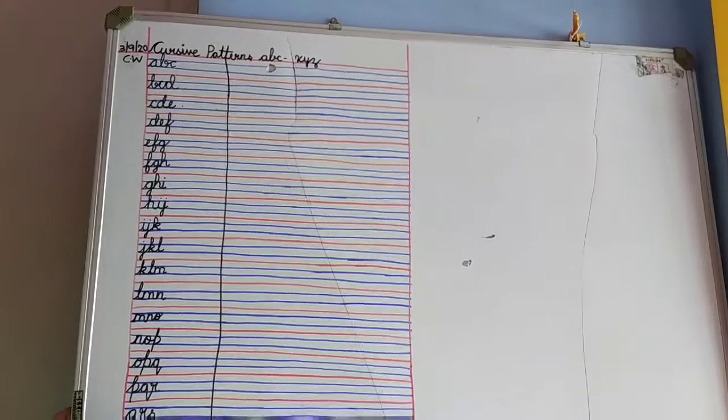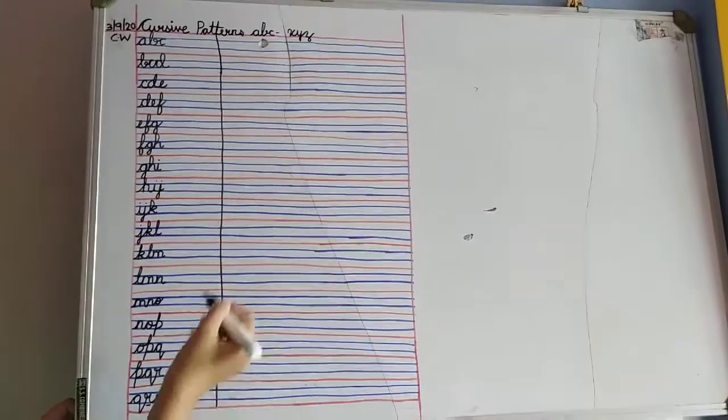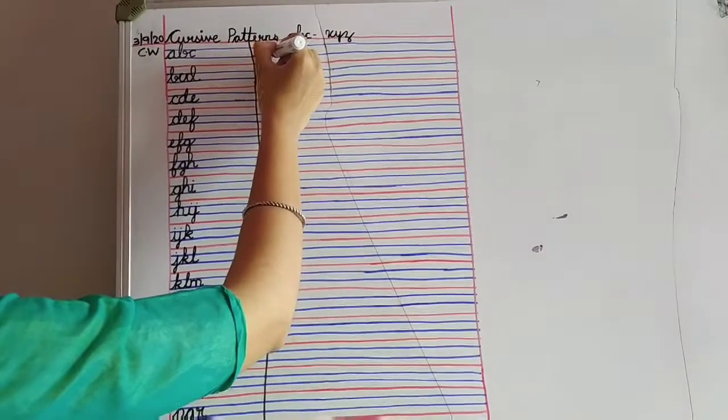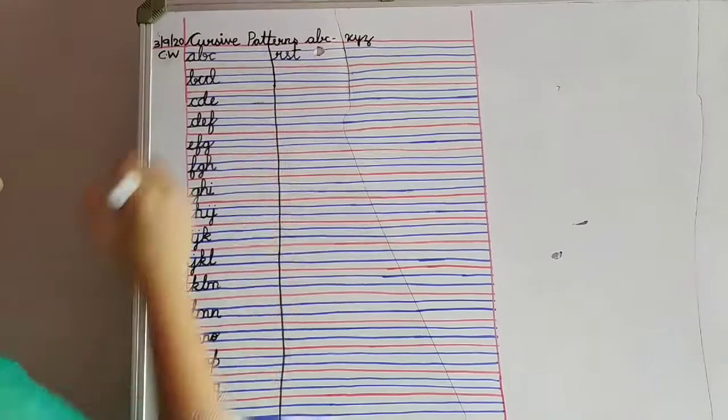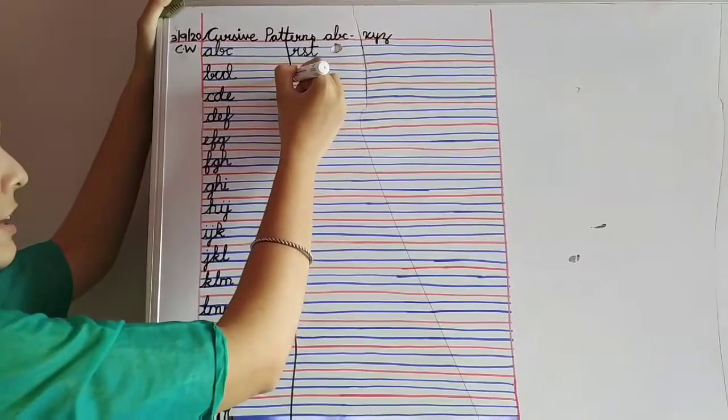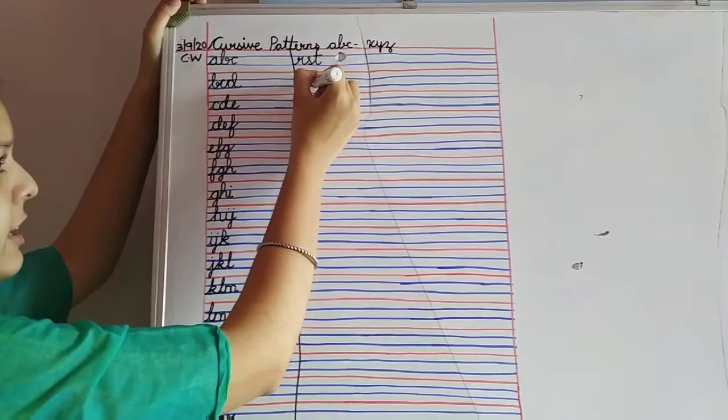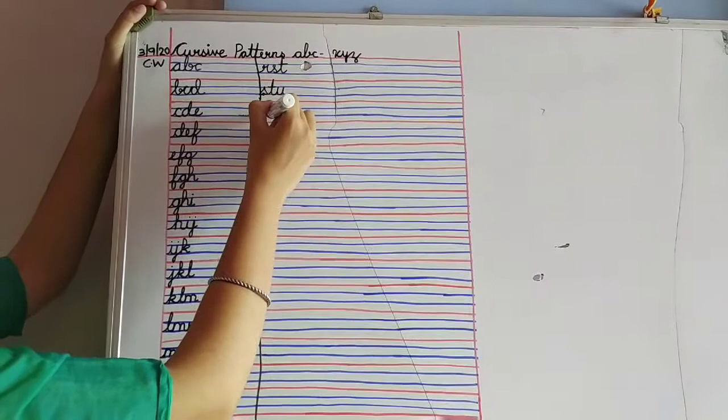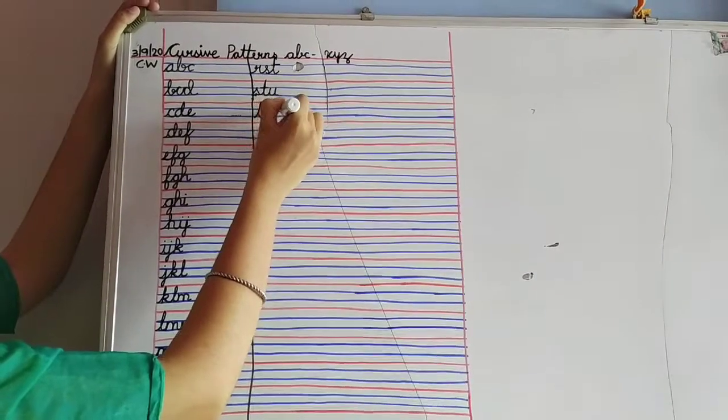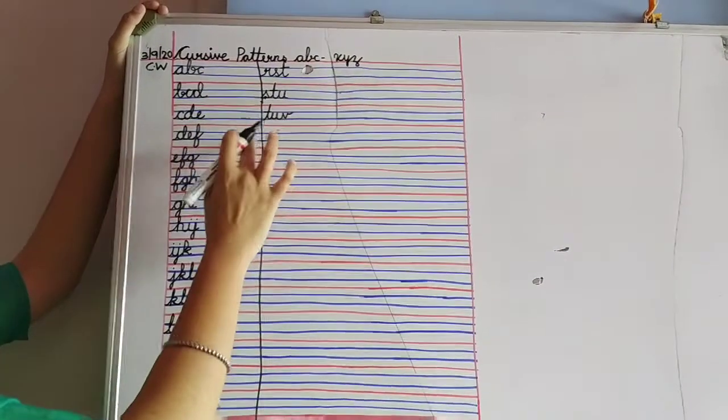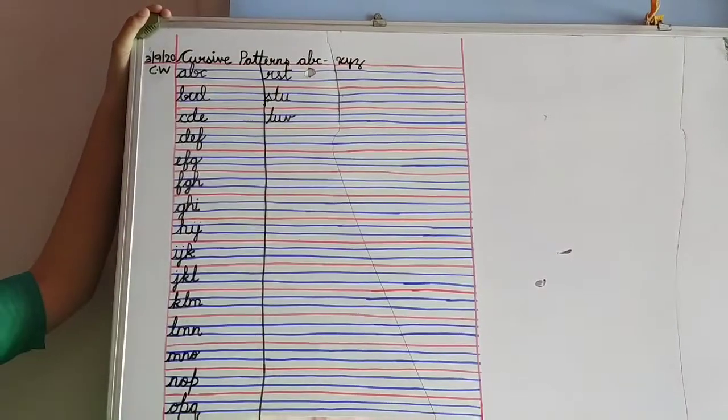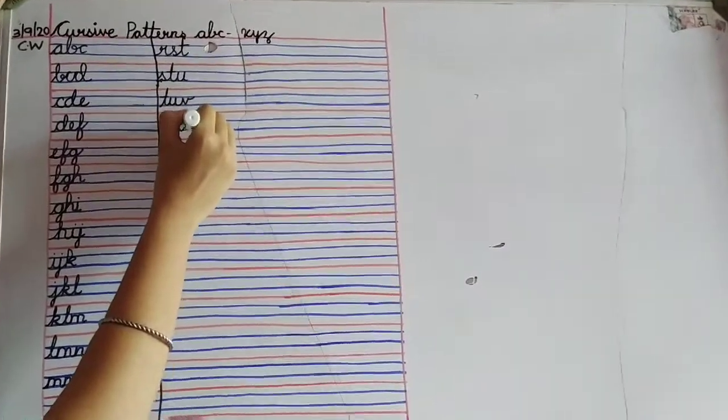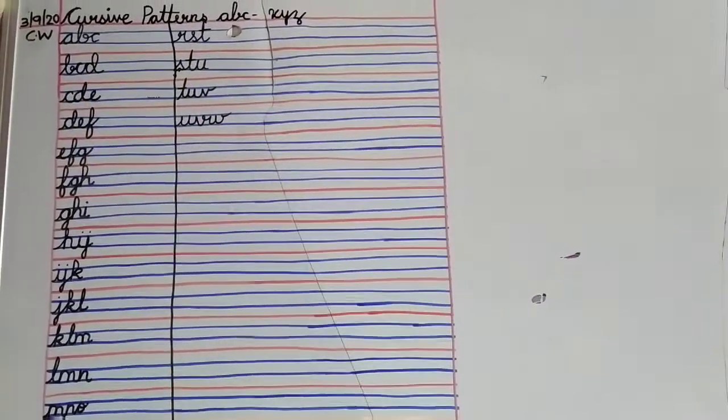Next. Which letter is here? R. So we will take R. R-S-T. S-T-U. Next, T-U-V. Touching the margin only, you will write here also. U-V-W.